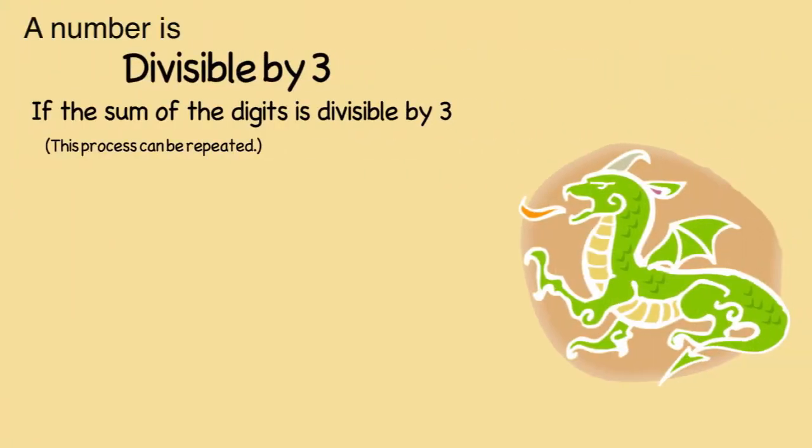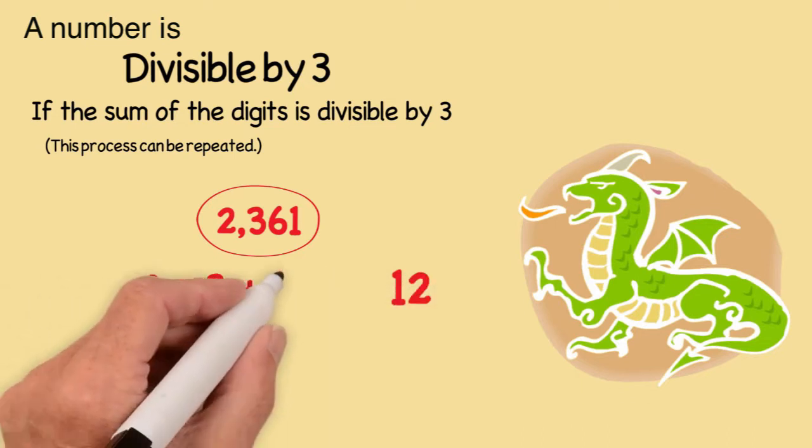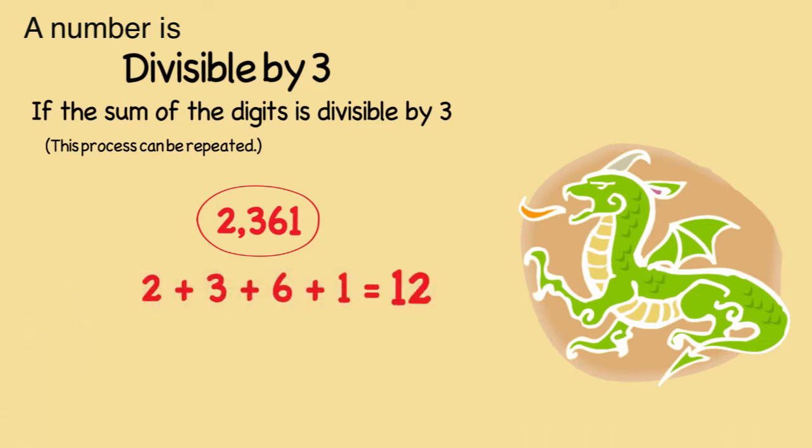Next, we're going to do 3. And as an example, we're going to have the number 2,361, which you can tell is divisible by 3 because the rule for 3 is, if all the digits add up to a number that's divisible by 3, in this case 12, because 2 plus 3 plus 6 plus 1 equals 12, and 12 is divisible by 3, 2,361 is divisible by 3.